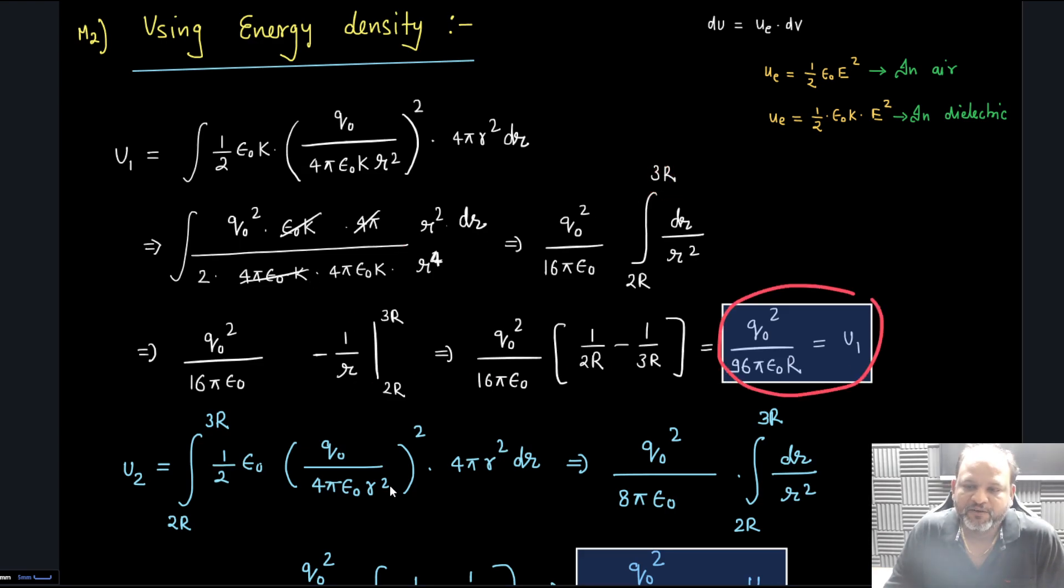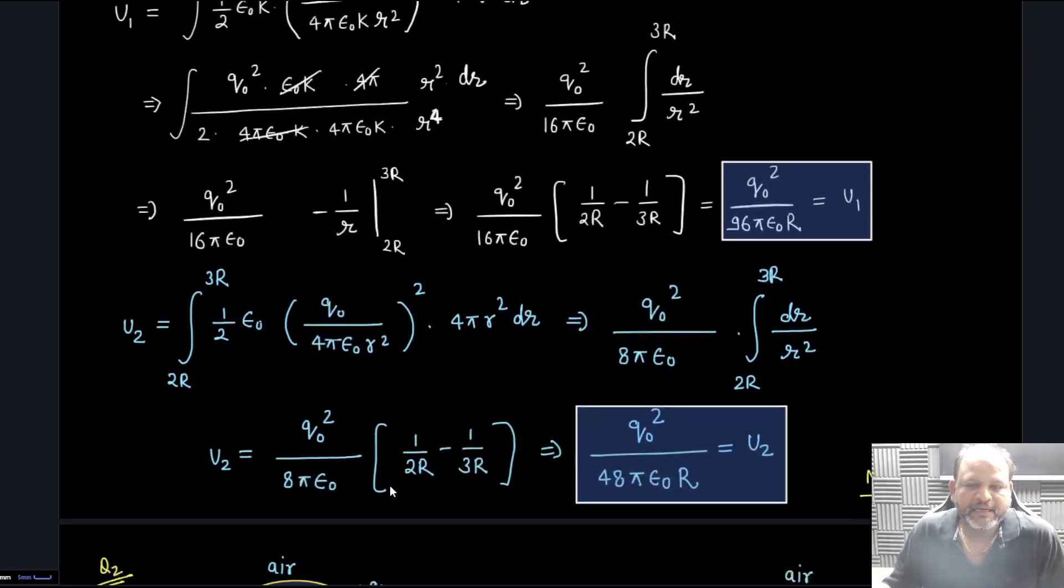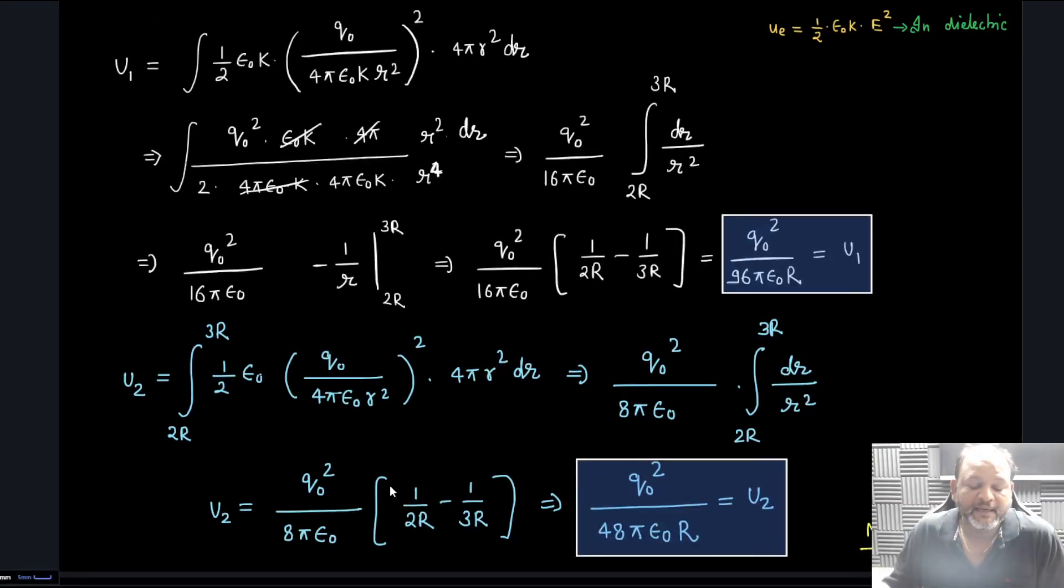We are getting the same value which is U1. Similarly U2 I can calculate in air, half epsilon naught kq by r square whole square 4π r square dr 2r to 3r. Definitely double of this will come and we are getting U2 as q naught square by 48π epsilon naught r. It has matched, so by both methods you can get this W1.